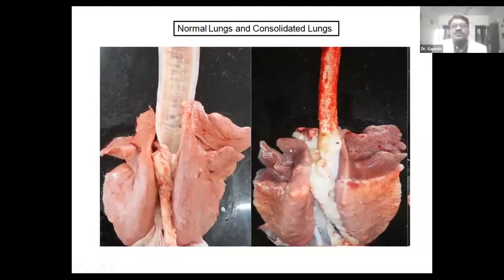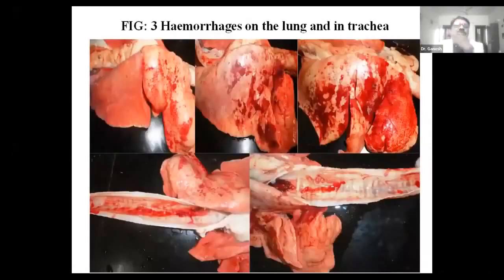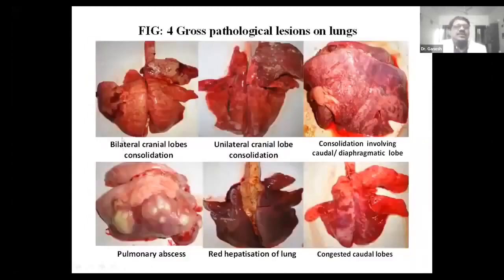In abnormal lungs, you will find this type of discoloration, which is due to consolidation. This is bilateral consolidation — both sides of the lung are affected with pneumonia. You will also get lesions like this: severe hemorrhages in the lungs. You will find this hemorrhage in the trachea also — hemorrhage and congestion. Many times you will get bilateral pneumonia where both sides are affected.